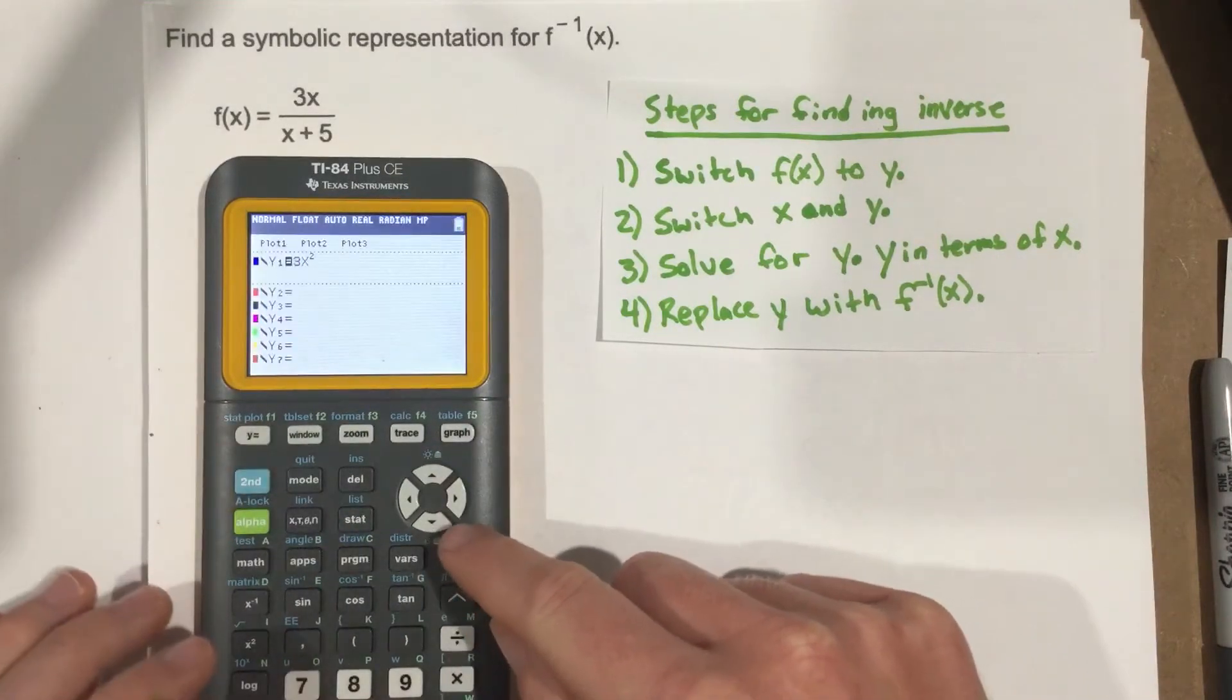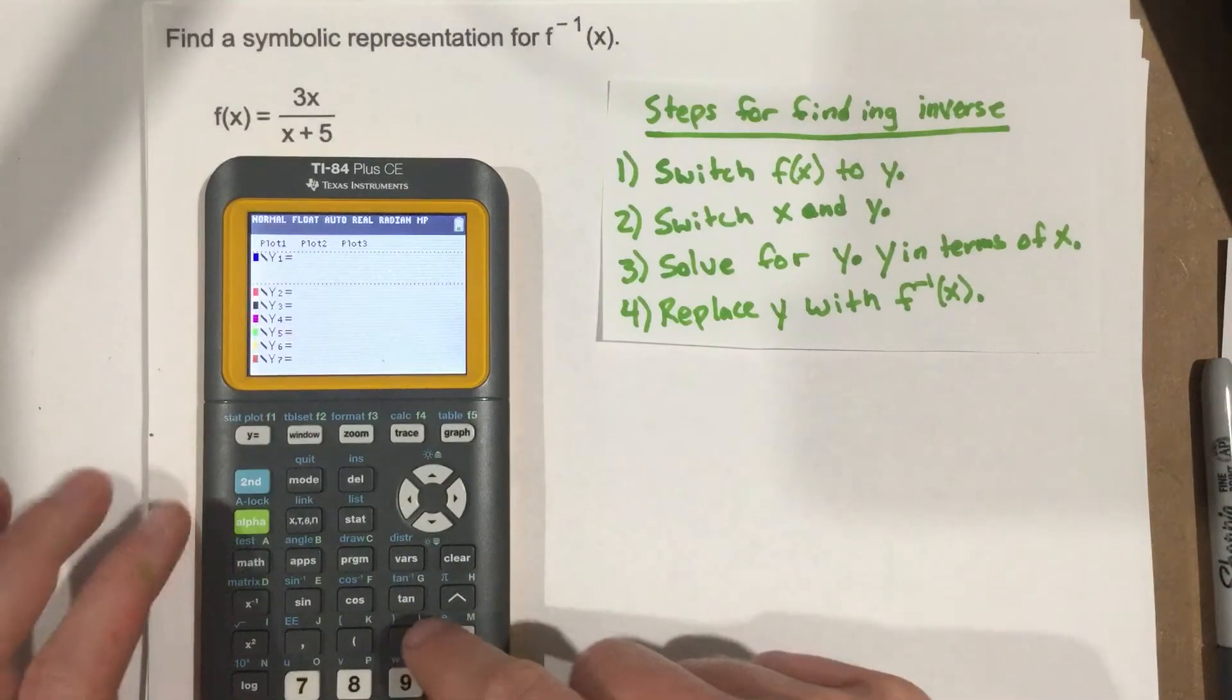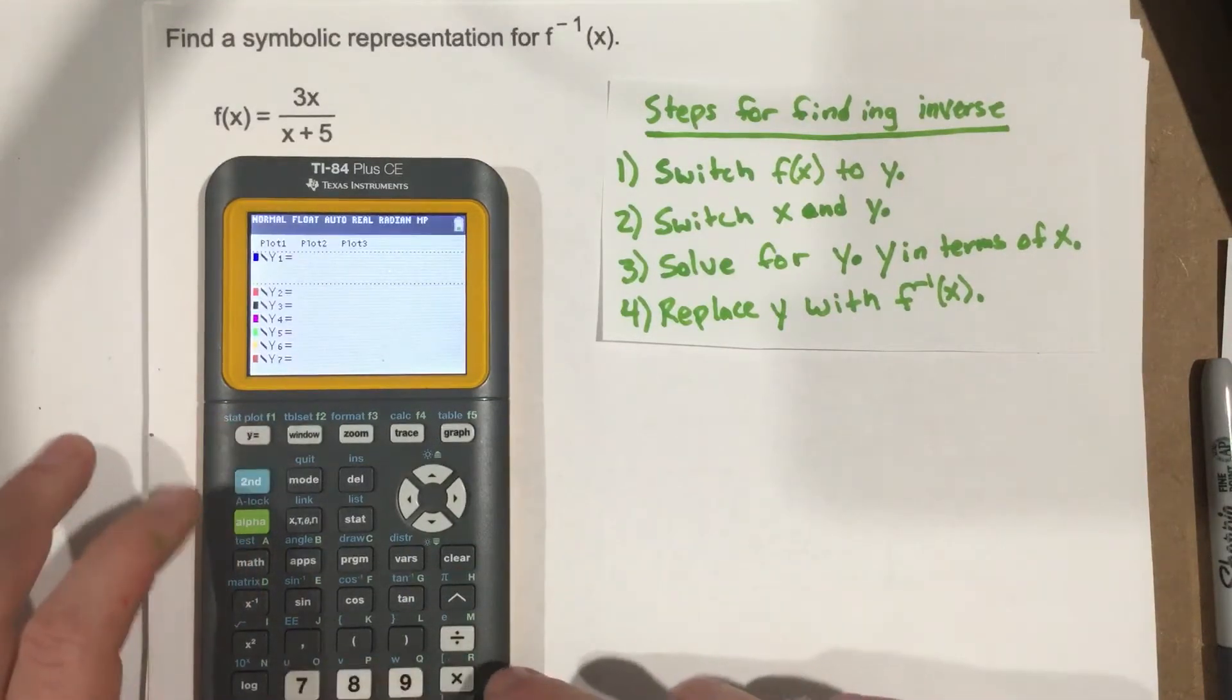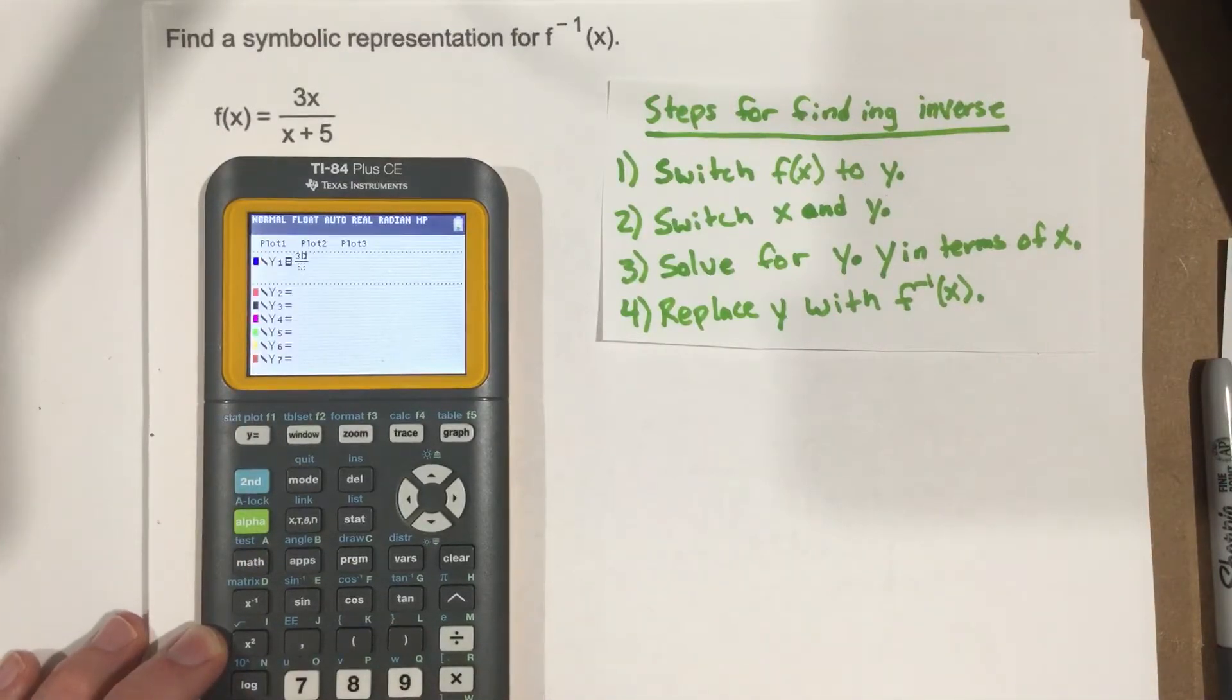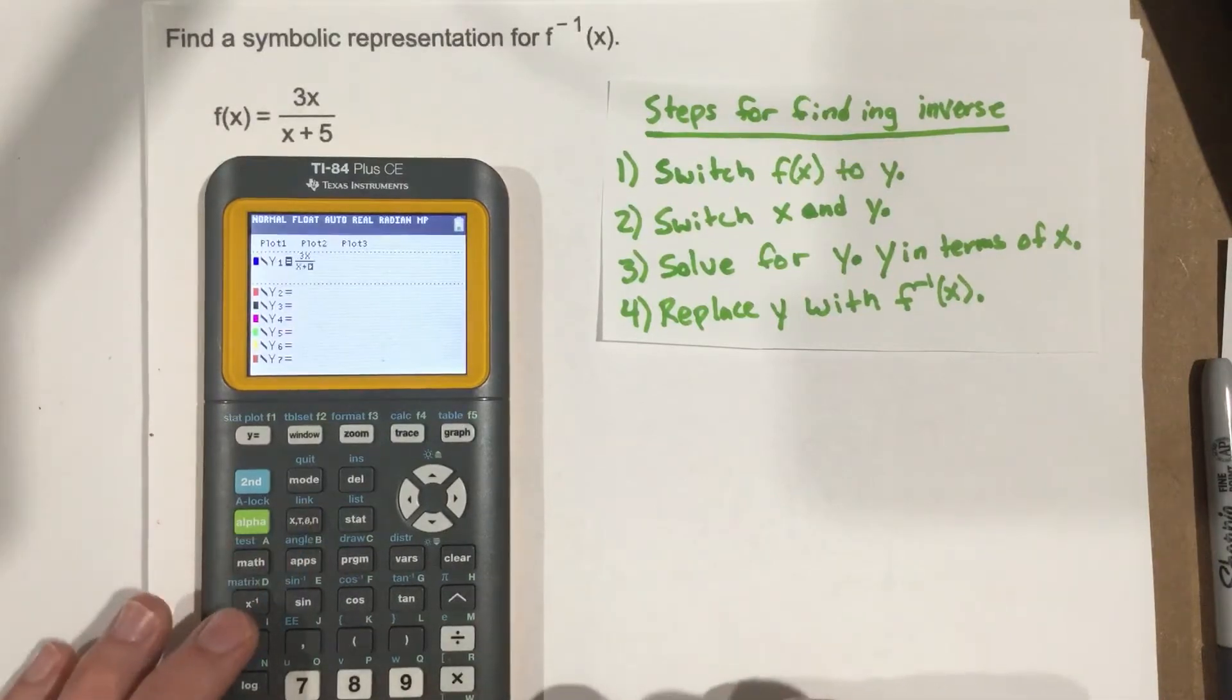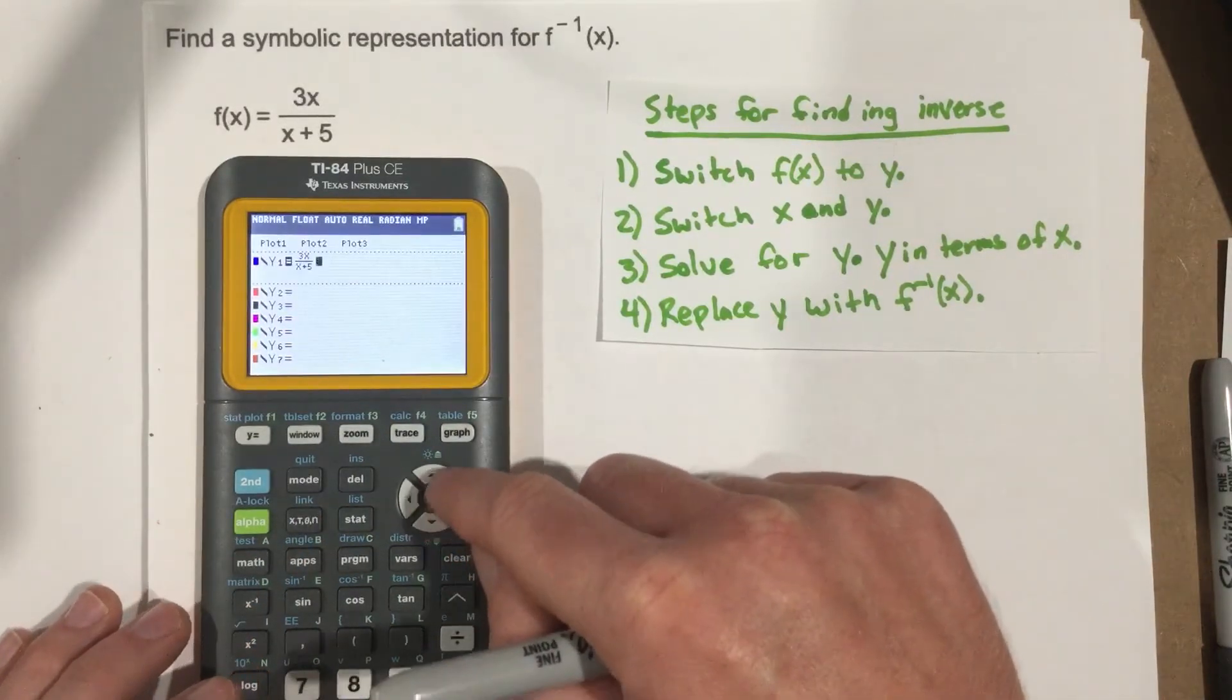y equals, we're going to say clear, we're going to go to a fraction, and we'll just put in 3x over x plus 5 real quick, and graph.